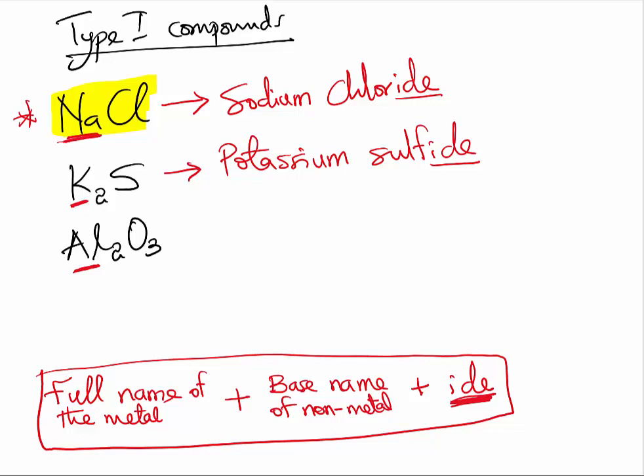And if we go to the third compound, again, all we do for Type 1 compounds is to simply follow the format. So this will simply be aluminum oxide. Very straightforward. No tricks, nothing difficult.